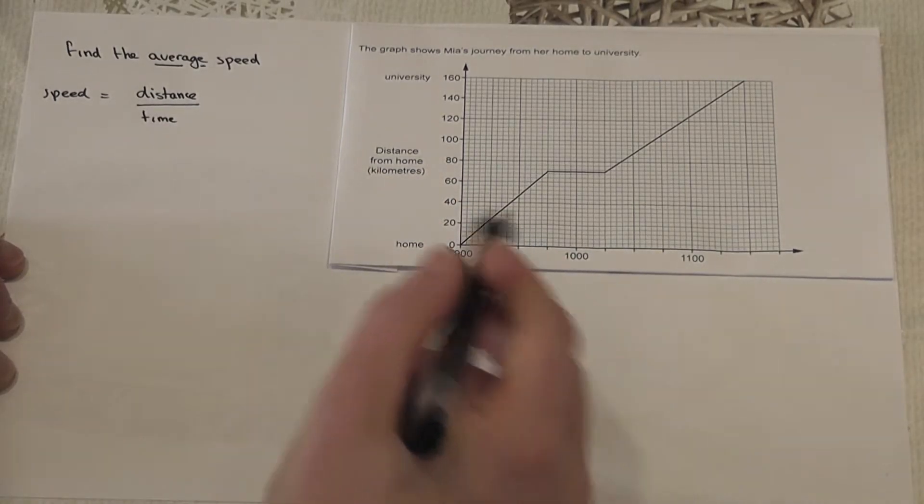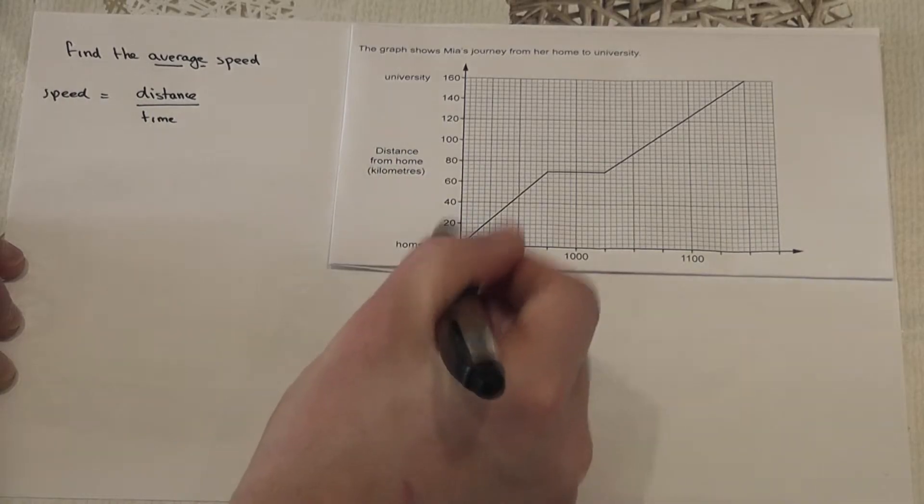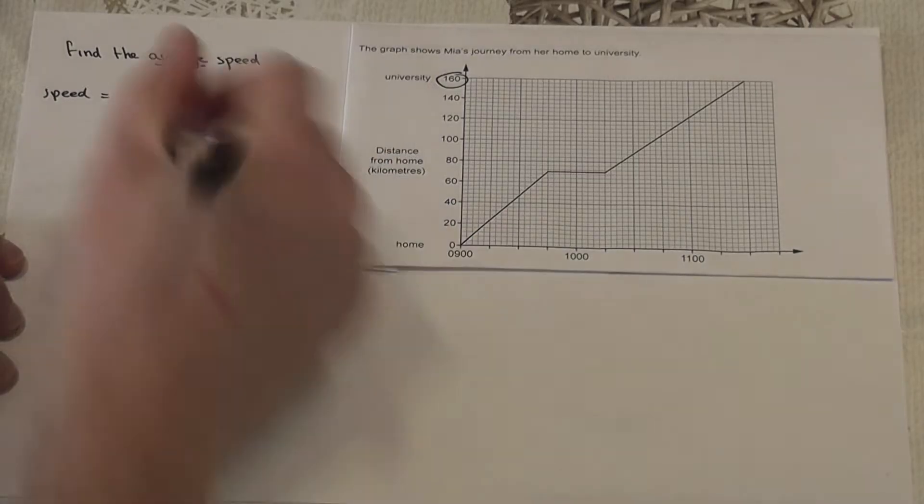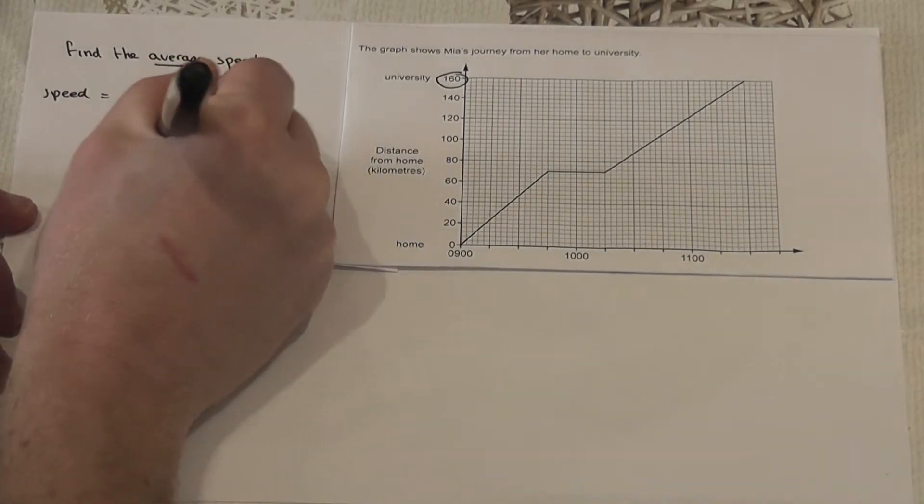Now from this graph we can see the distance from home to university is 160. The distance is 160 kilometers.